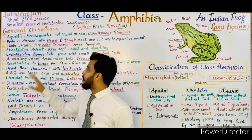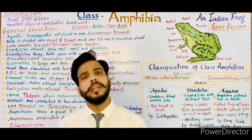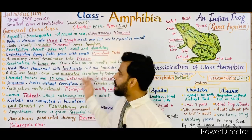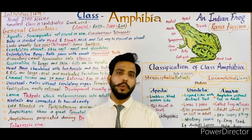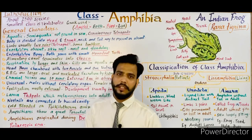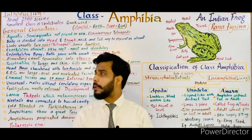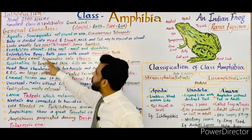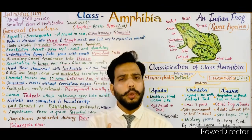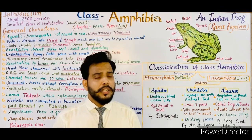Exoskeleton is absent in amphibians. In fishes, scales were present as exoskeleton, but in amphibians the outer covering is totally absent. The skin is soft, moist, glandular, and may be pigmented, as seen in the diagram of a frog. Amphibians have loosely fitting, soft and moist skin which may be gelatinous and pigmented.